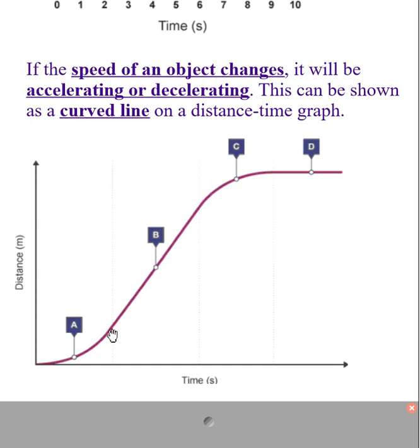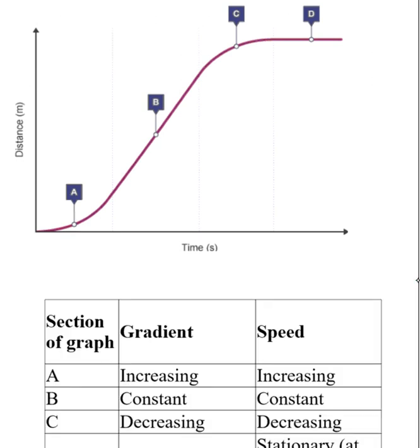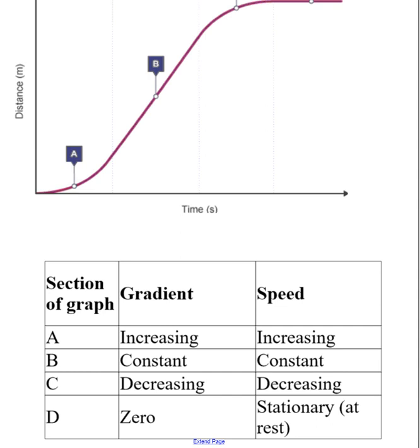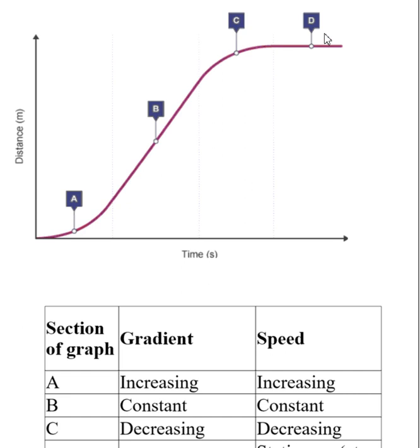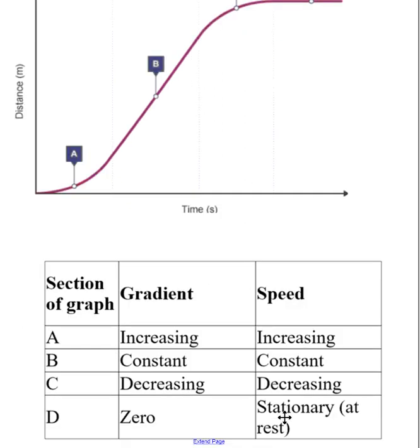In the distance-time graph, if the line is curved, the speed of the object is changing—it will be accelerating or decelerating. There are four portions: Section A with increasing gradient means increasing speed. Section B with constant gradient means constant speed. Section C with decreasing gradient means decreasing speed. Section D with zero gradient means the object is at rest.